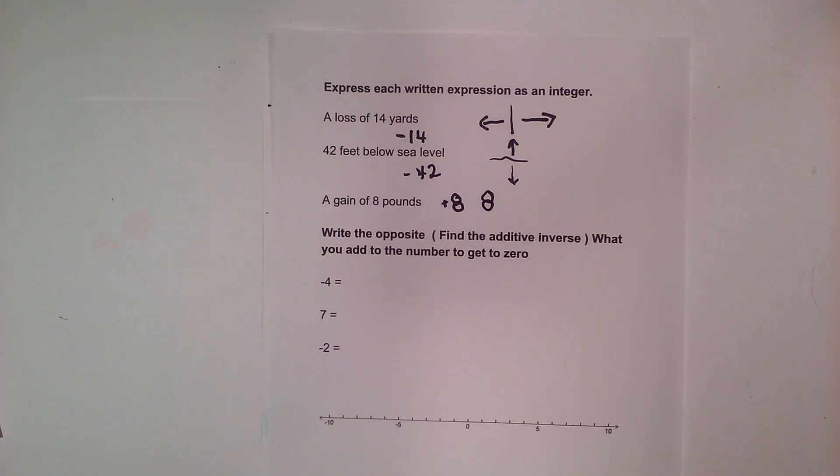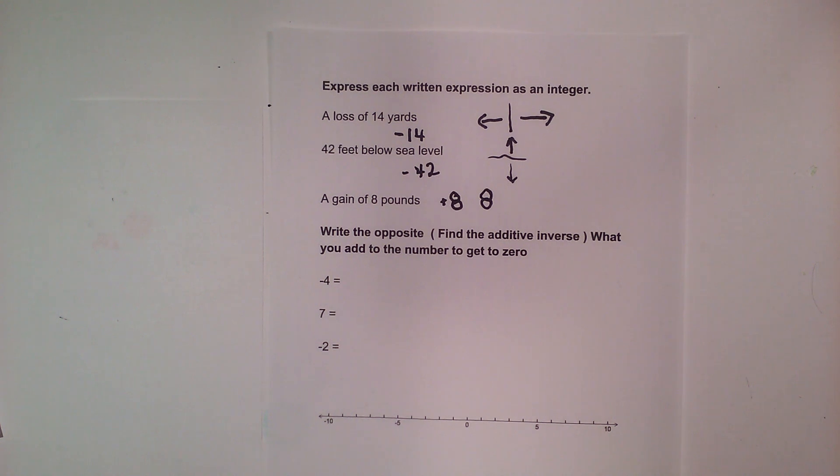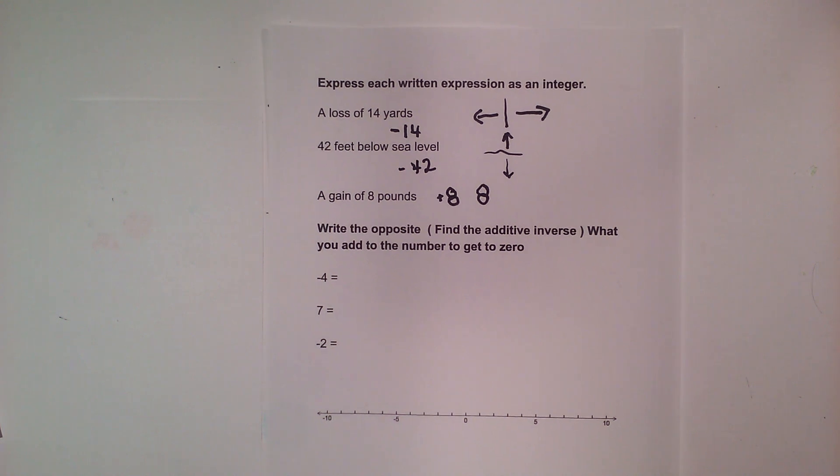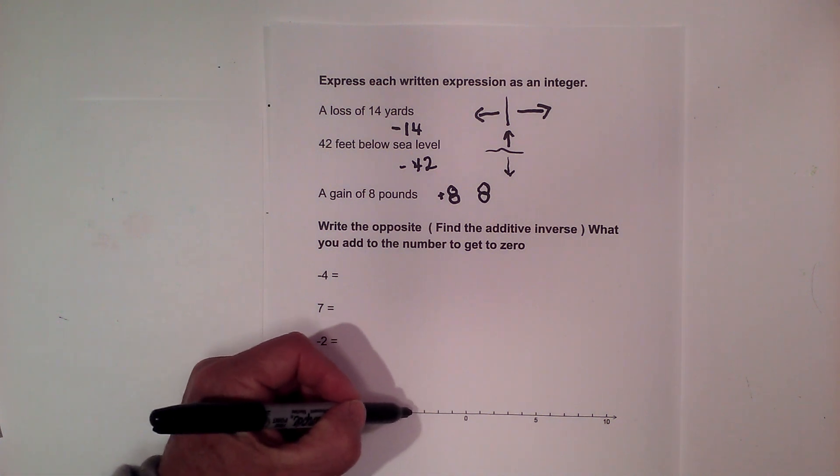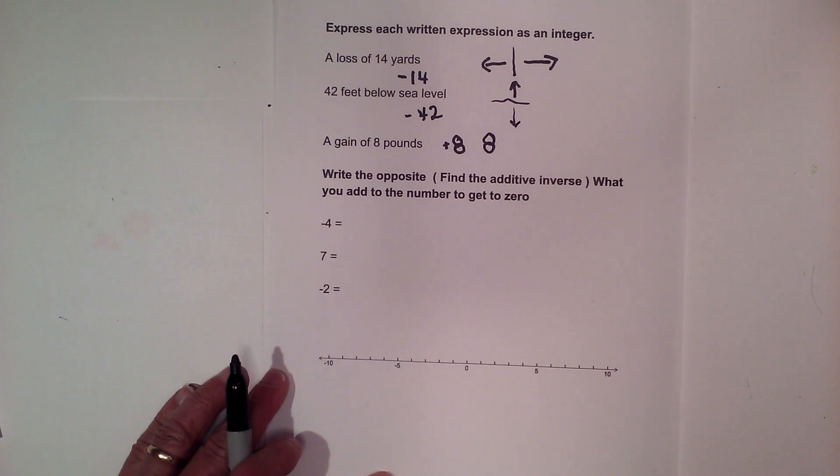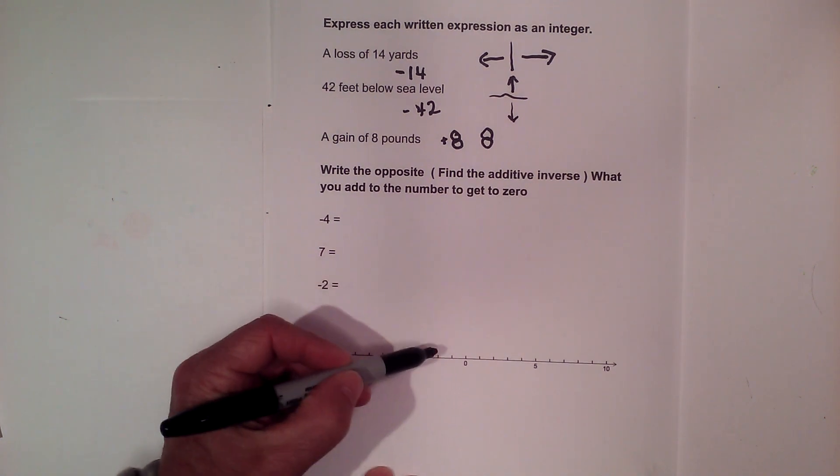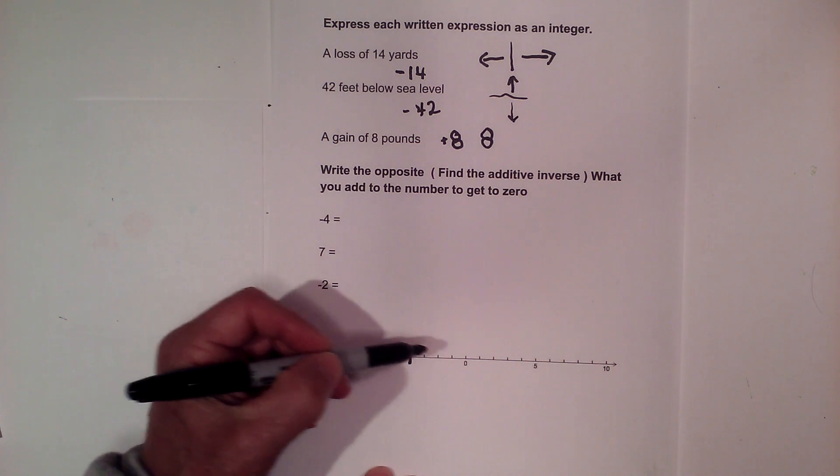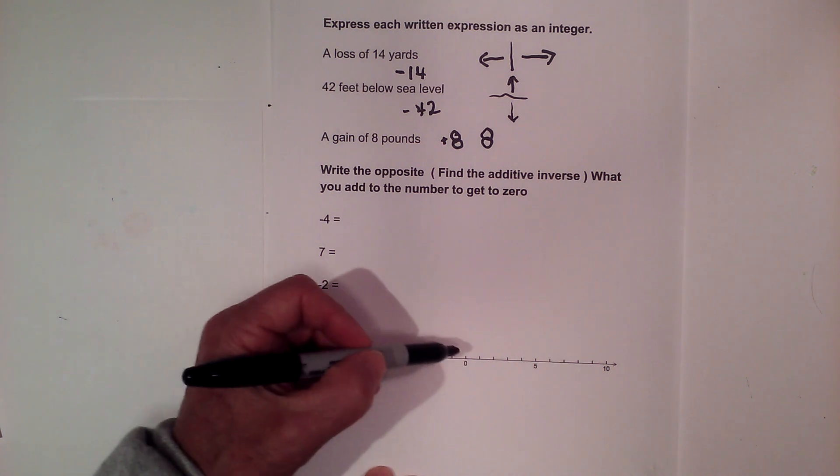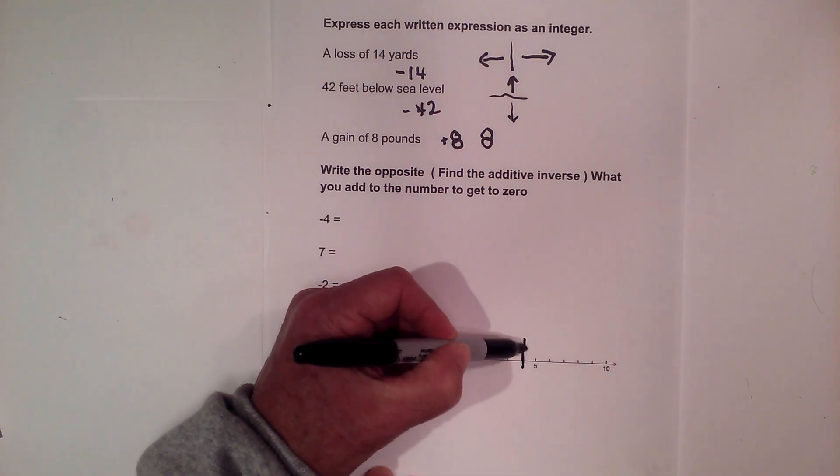Find the opposite. Technically, this is the additive inverse, what you need to add to the number to get to zero. Also you may have heard it explained as a number that's the same distance away from zero. If negative 4 is here, we have 1, 2, 3, 4 units. What is another number that is also 4 units away? 1, 2, 3, and this is positive 4.